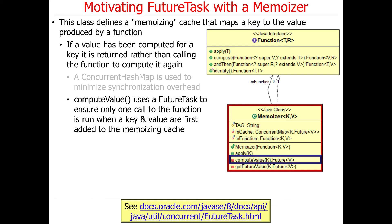The main method doing the heavy lifting is computeValue, and it uses a FutureTask. The FutureTask is used to ensure that only one call to the expensive function is actually run when a key and value are first added to the memoizing cache.